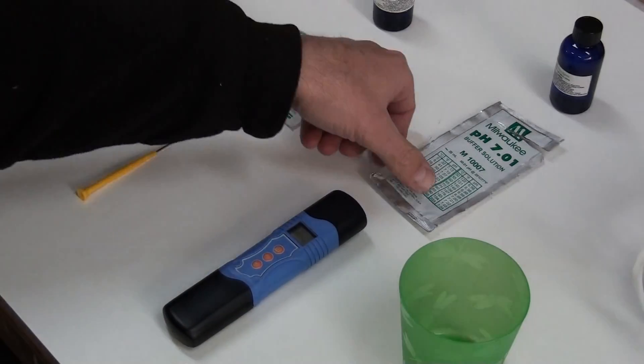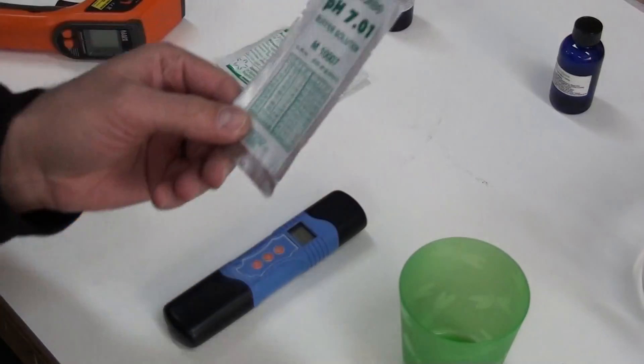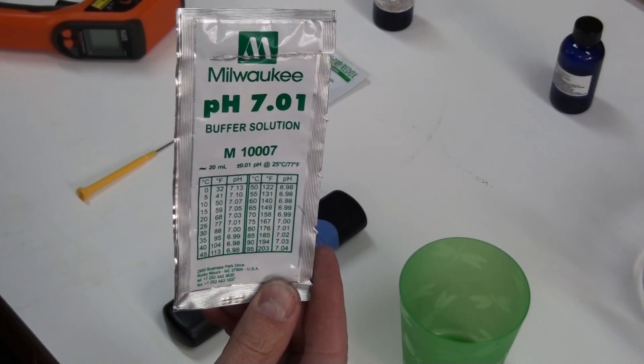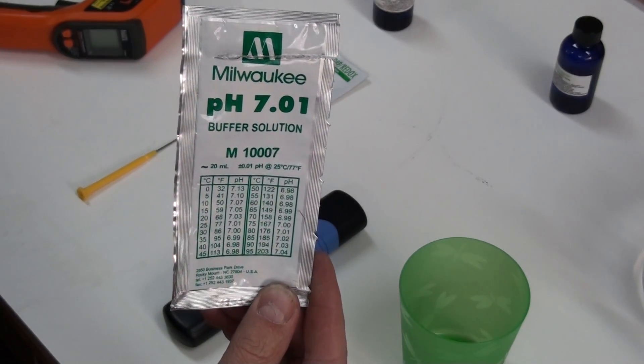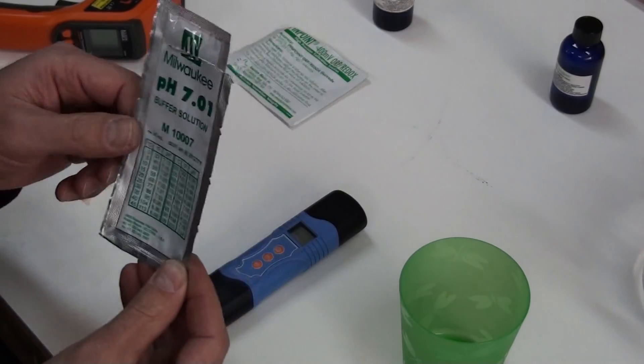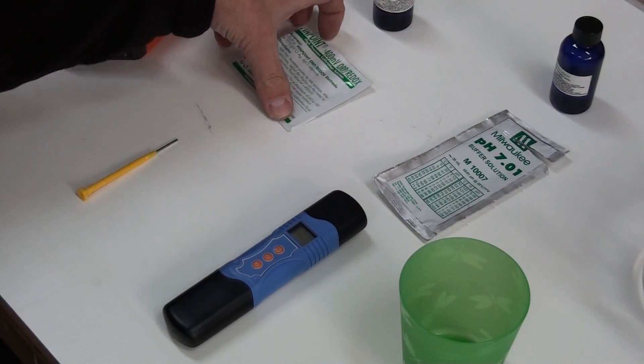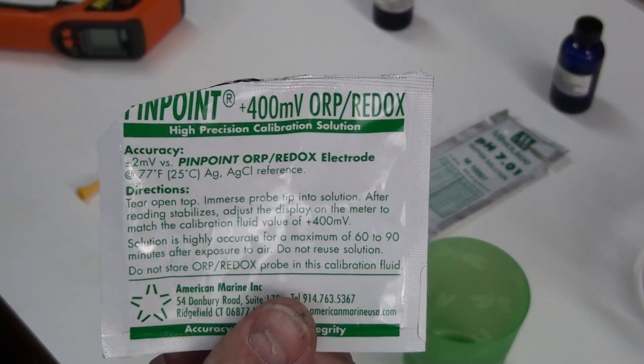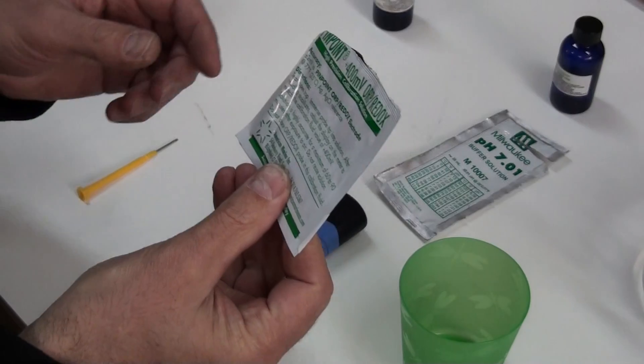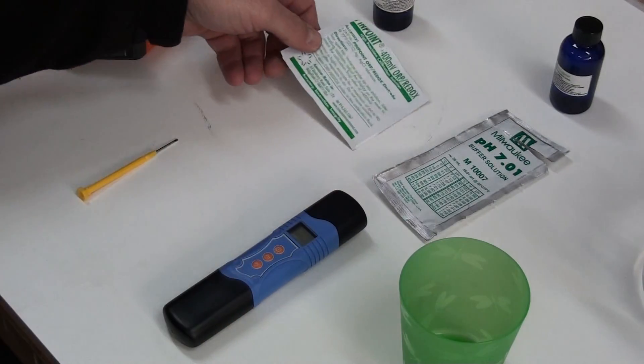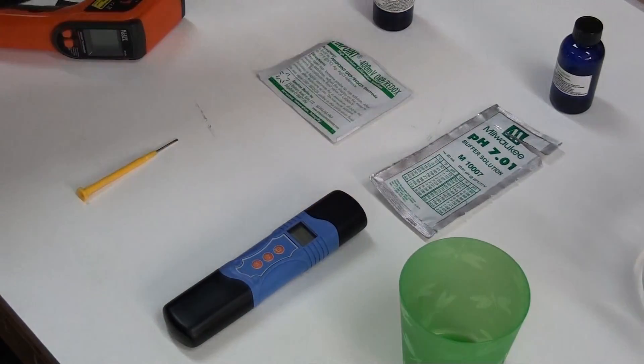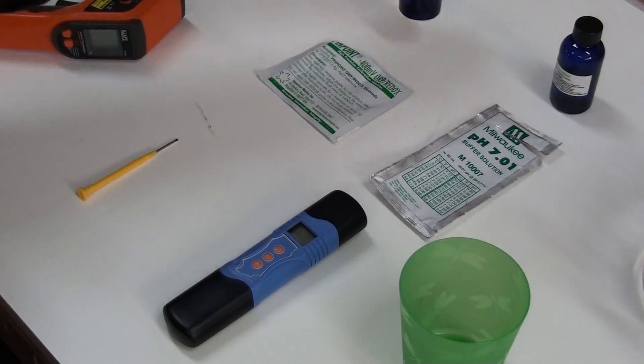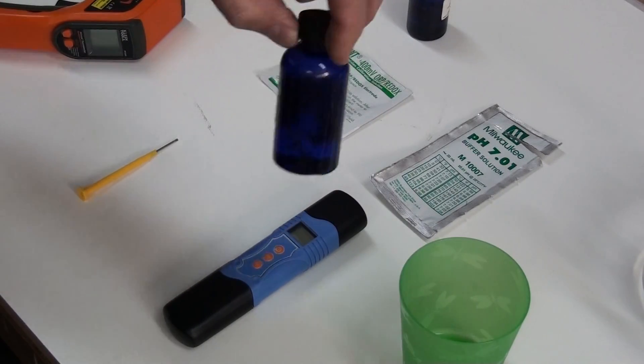And what we do, how we accomplish that is we use some solution that's already pre-calibrated. This is a pH of 7 and for the ORP this is a plus 400 millivolt calibrated solution. I've used these before when I put the solution in these bottles so we'll go ahead and use those.